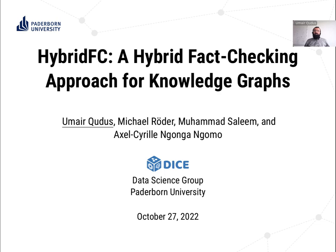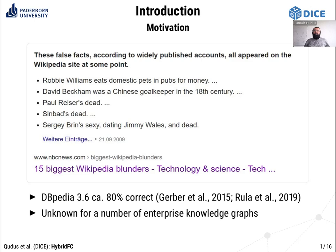With the increasing size of data on the web, the need for automatic fact-checking approaches is also increasing. We see a lot of misinformation on the web, particularly on social media, news pages, or Wikipedia. Some examples from Wikipedia are shown on the slide — for example, David Beckham was a Chinese goalkeeper in the 18th century. These are funny as well as false. Numerous knowledge graphs are being created by crawling information from the web, in particular DBpedia, which is created from the info boxes of Wikipedia pages. According to surveys, version 3.6 of DBpedia is 80% correct, meaning 20% wrong information is still a big problem. These knowledge graphs are being used as background knowledge in a growing number of applications, including healthcare, autonomous chatbots, and related applications.